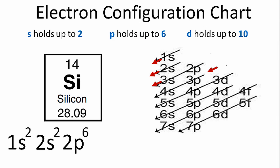We have 14. In the third row, after the 2p, we've gone to the 3s. S orbitals hold up to 2. Let's put 2 in there. We have 12.